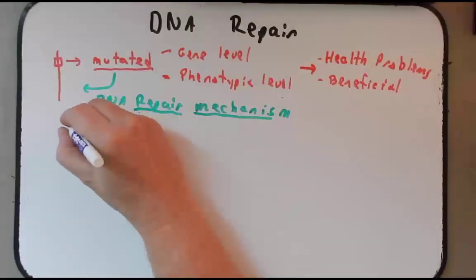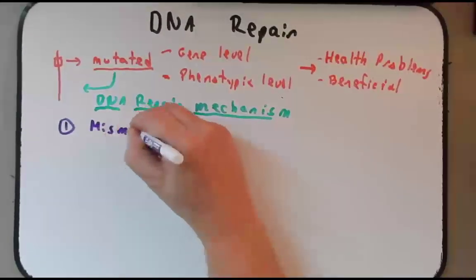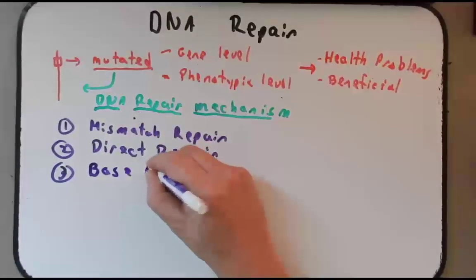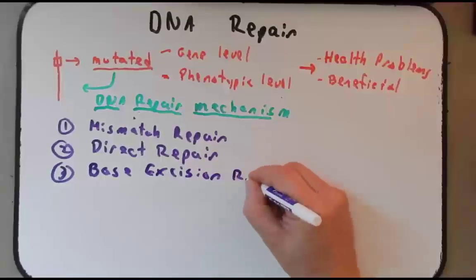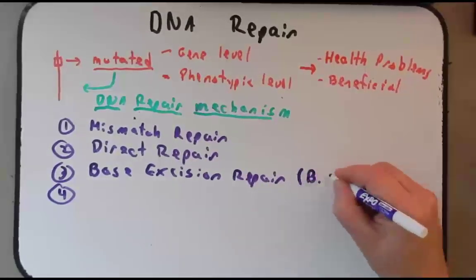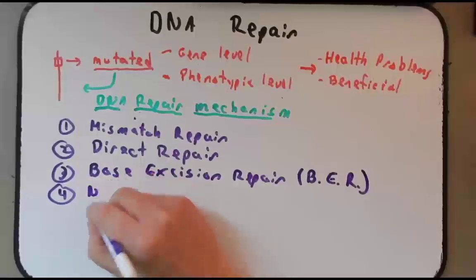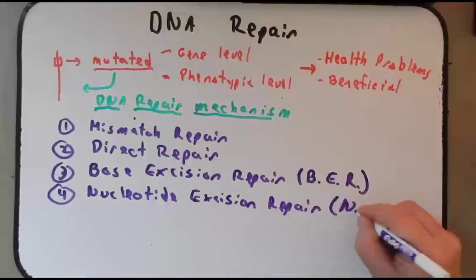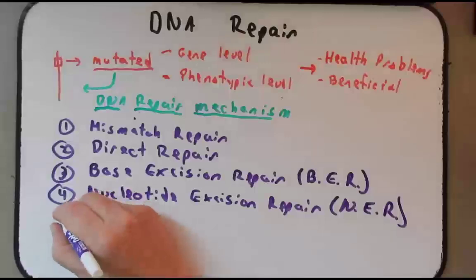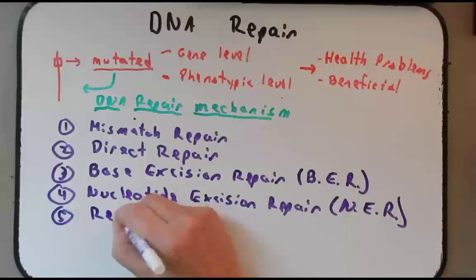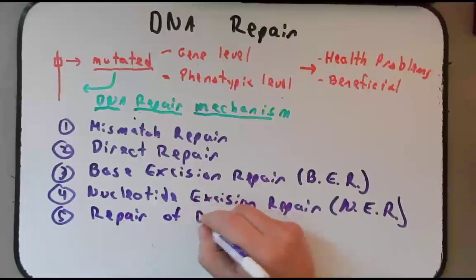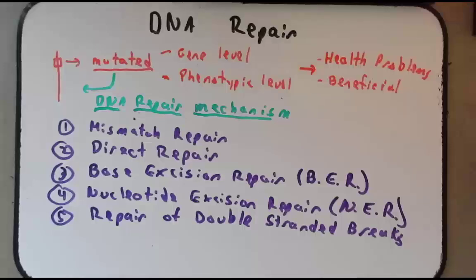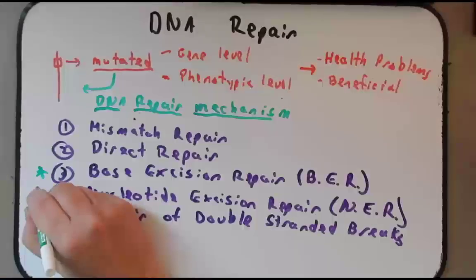Your book discusses several mechanisms and I'm just going to list them right here: mismatch repair, direct repair, base excision repair which we'll often call BER, and then there is a mechanism called nucleotide excision repair, often abbreviated as NER. And then your book also discusses repair of double-stranded breaks, and we talked a little bit about how that's caused by things like x-rays. However, in this podcast and for this class we're going to focus mainly on base excision repair and nucleotide excision repair.